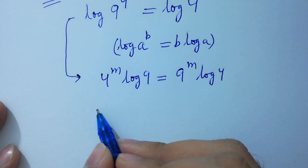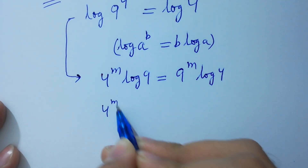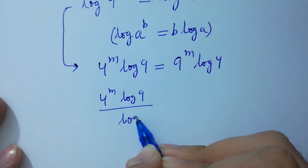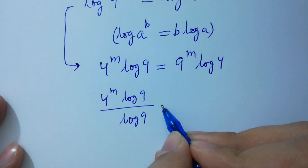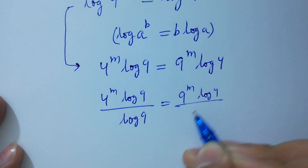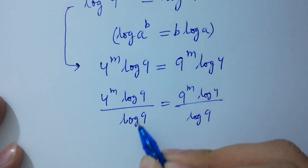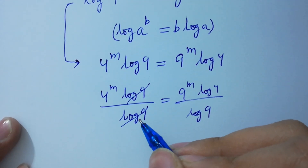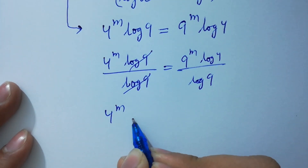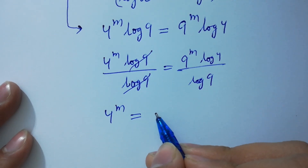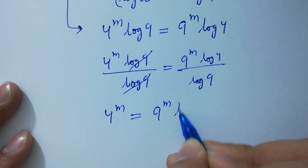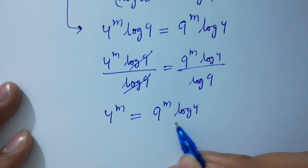In the next step, divide on both sides by log 9. Log 9 and log 9 will be cancelled. We get 4 to the power m equal to 9 to the power m times log 4 over log 9.